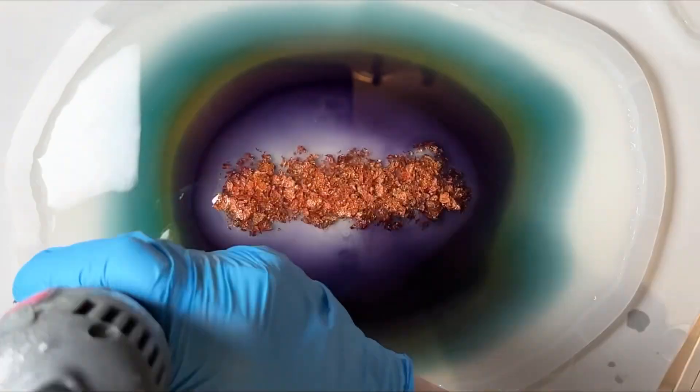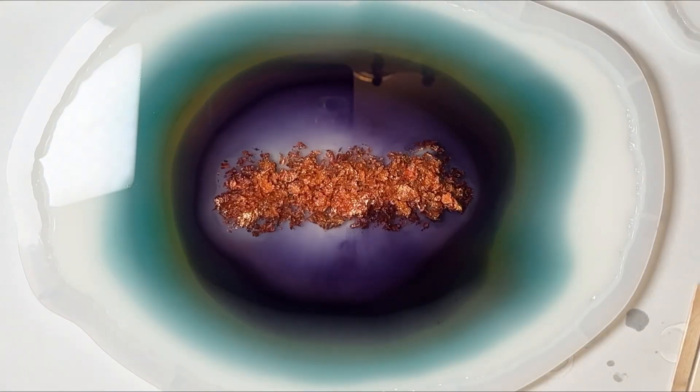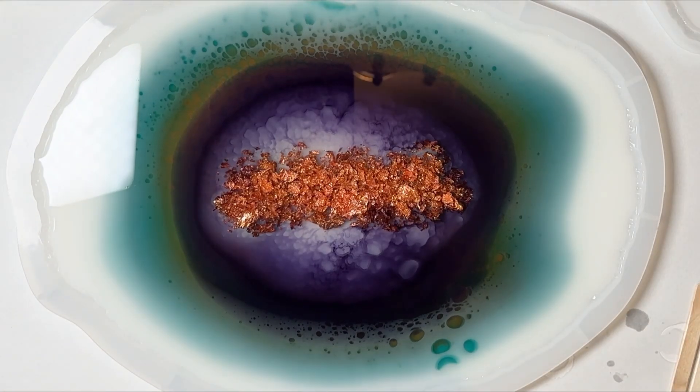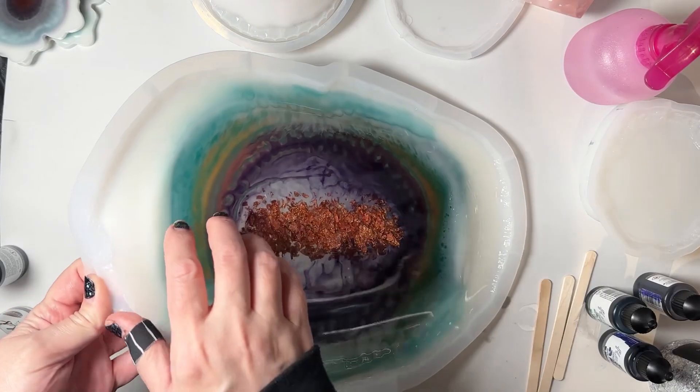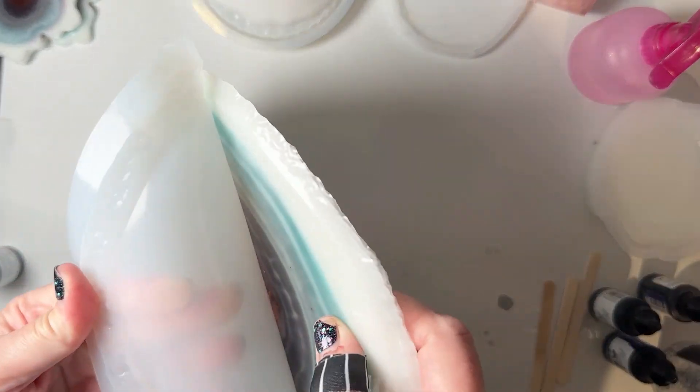Then I went over that with a heat gun and spritzed it with some isopropyl alcohol and allowed that to cure. I only let it cure for about 10 hours, then I demolded it.